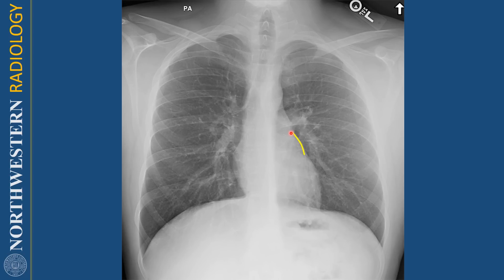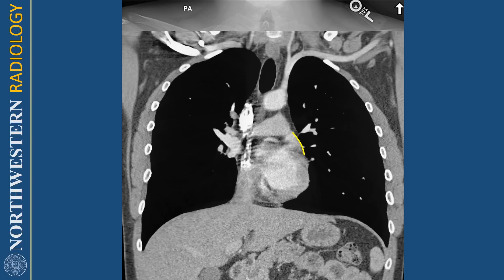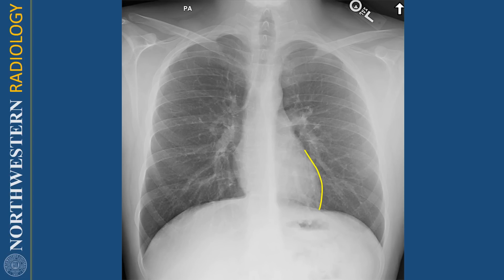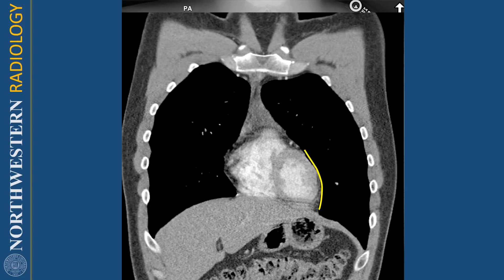Going down from there, we have the left atrial appendage, which forms this contour here — it's the top part of the heart. Here is the corresponding CT showing the left atrial appendage. And then this is the left ventricle. The left ventricle forms the majority of the left heart border on the frontal radiograph. Here is the corresponding CT showing the left ventricle.